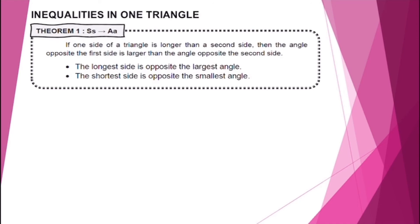Let's discuss first the inequalities in one triangle. For Theorem 1, if one side of a triangle is longer than a second side, then the angle opposite the first side is larger than the angle opposite the second side. The longest side is opposite the largest angle, while the shortest side is opposite the smallest angle.